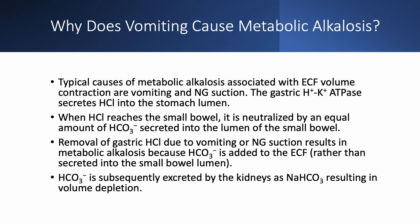Why does vomiting cause metabolic alkalosis? Normally, the gastric hydrogen-potassium ATPase secretes HCl into the stomach lumen. Once this HCl reaches the small bowel, it is neutralized by bicarbonate secreted by the bowel, resulting in a net zero. If we suction out or vomit out that HCl, then the bicarbonate dumped into the lumen of the small bowel will be absorbed into the blood, and this is why you develop metabolic alkalosis.